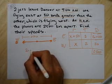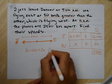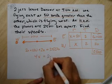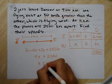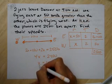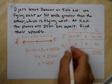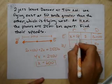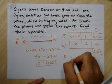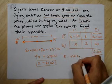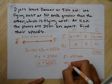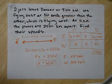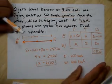Rate times time gives distances: east is 2(X plus 50) = 2X plus 100, and west is 2X. The combined distance equals 2,500, so: 2X plus 100 plus 2X equals 2,500. That gives 4X equals 2,400, so X equals 600. The west jet traveled at 600 km/h and the east jet traveled at 650 km/h.